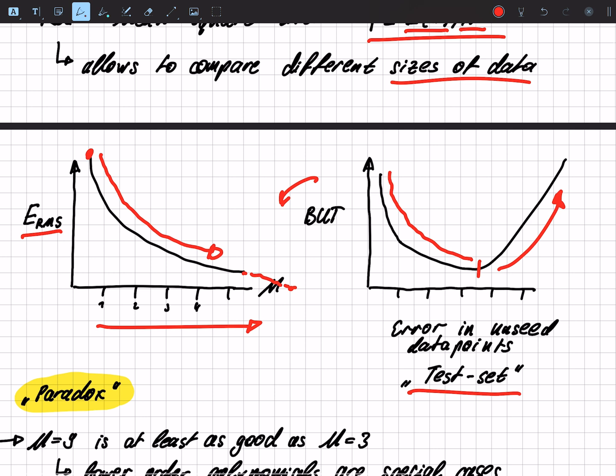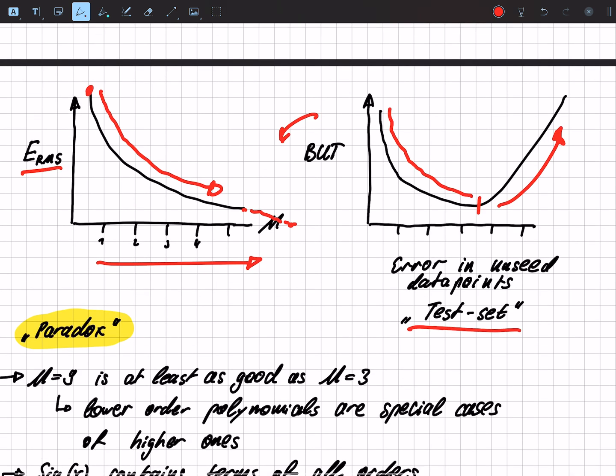So this is kind of a paradox, right? Because we have the polynomial of degree 9 that is at least as good as the polynomial of degree 3.